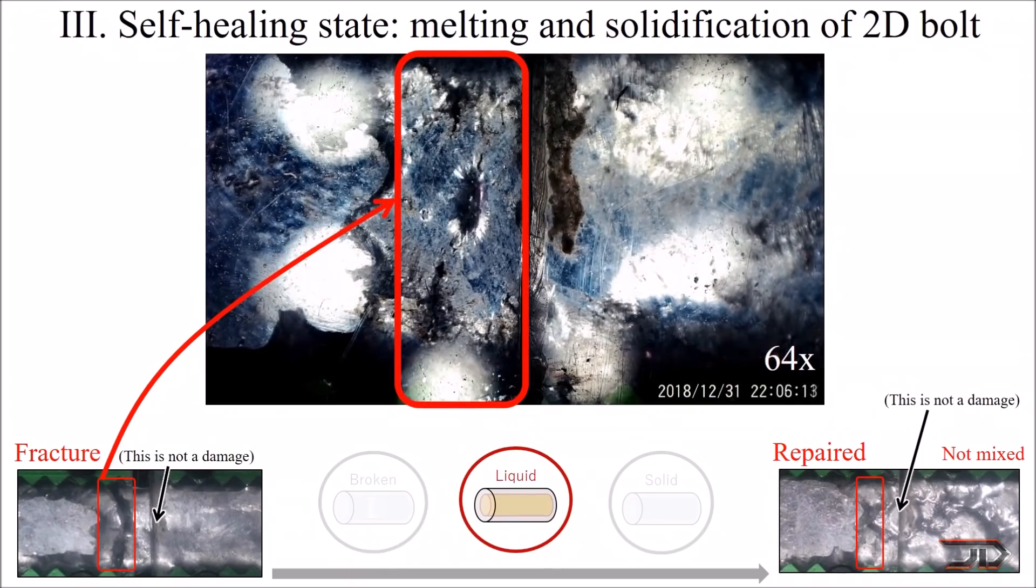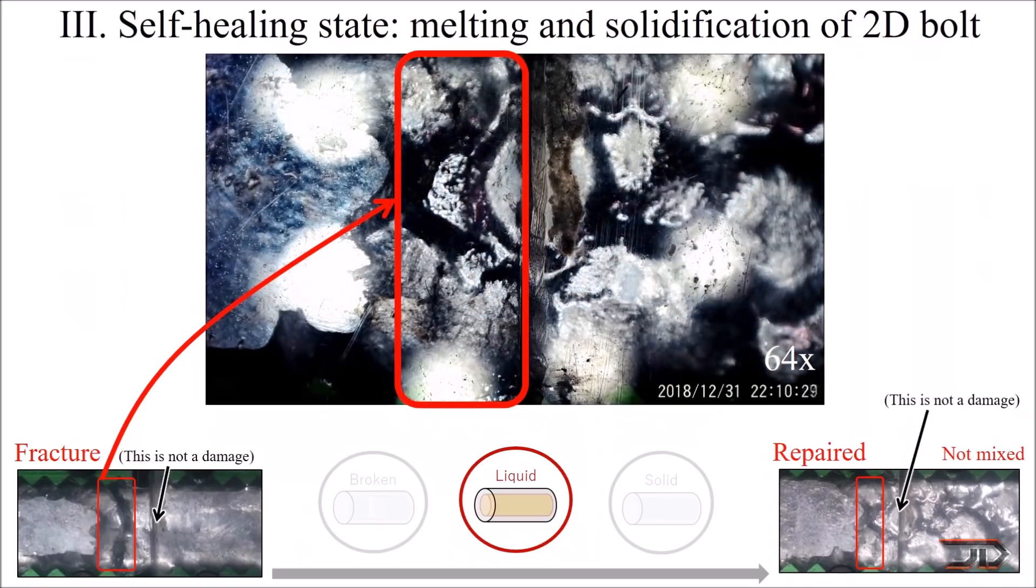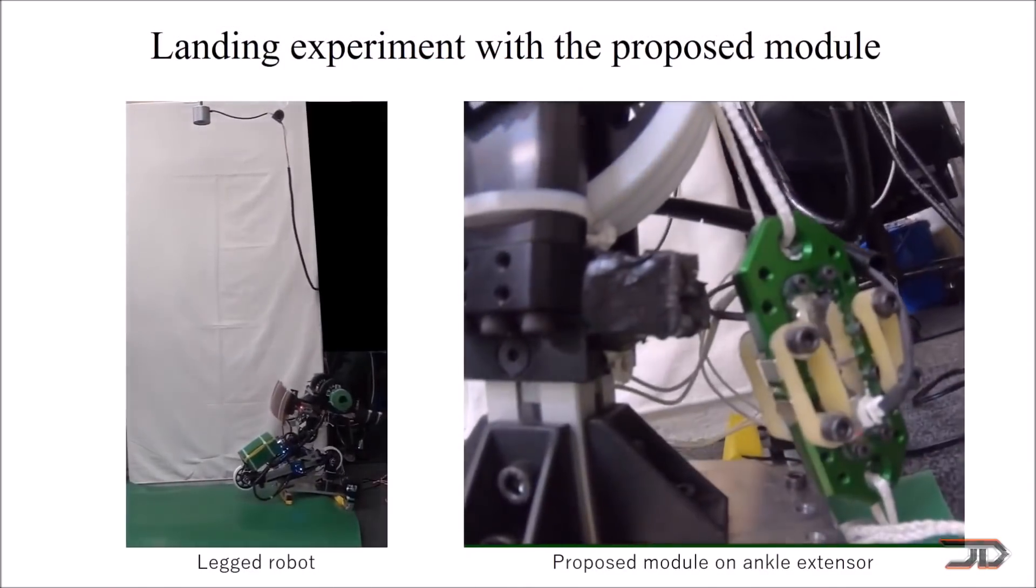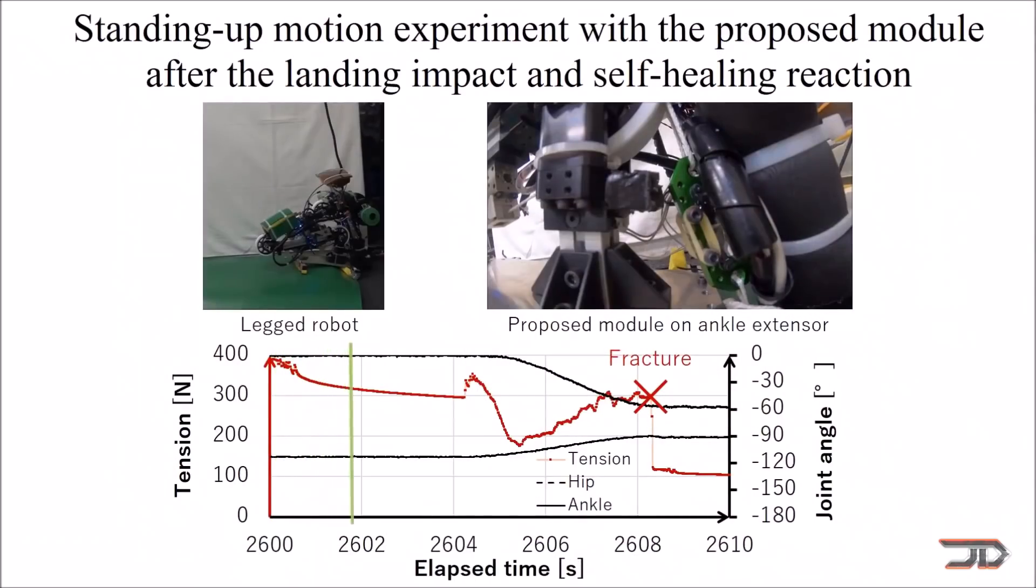However, there is one major drawback to this robotic part which can heal itself, and that is that the reunified alloy is 70% weaker after it breaks. Nevertheless, we see a lot of robotics with self-healing polymers, and stuff like that, so we're probably going to see more sophisticated self-healing robots in the future.